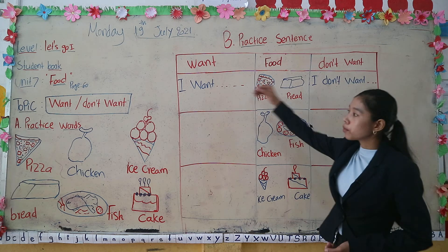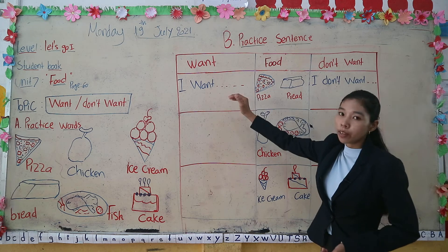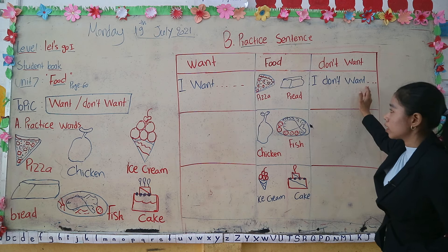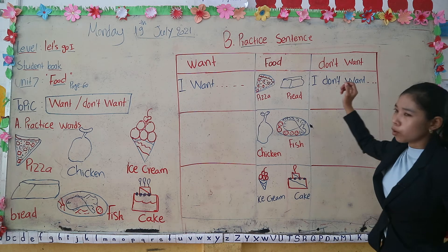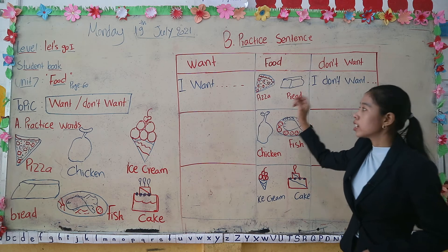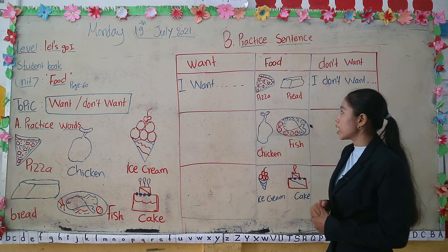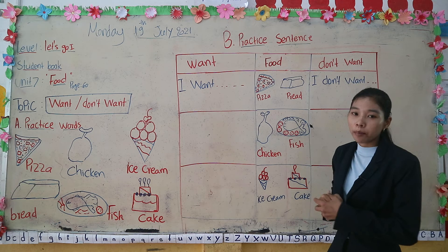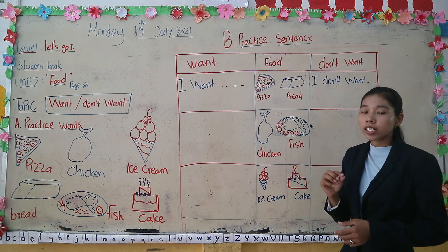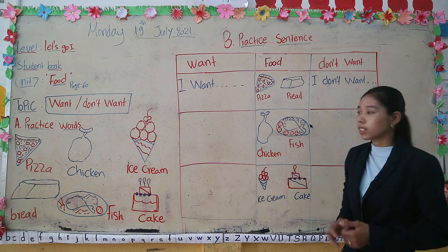Okay everyone, so we move to letter B — practice sentences. We will practice sentences with the topic 'want' and 'don't want.' I will explain a little bit to make it easy for you to practice.